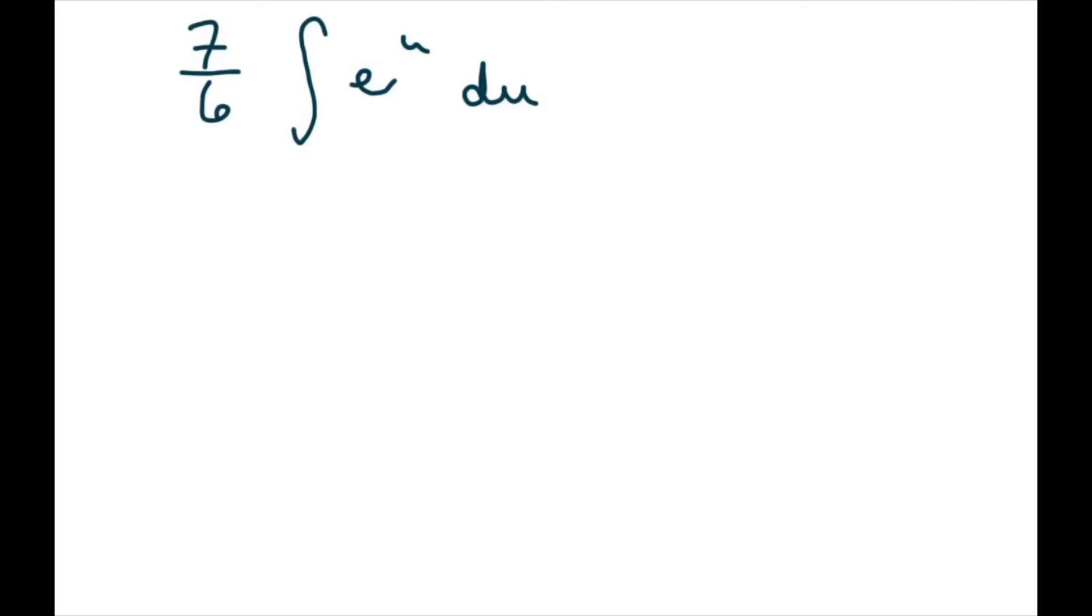So basically when you evaluate this integral, you're going to get 7 over 6. The derivative of e to the u is just e to the u plus c.